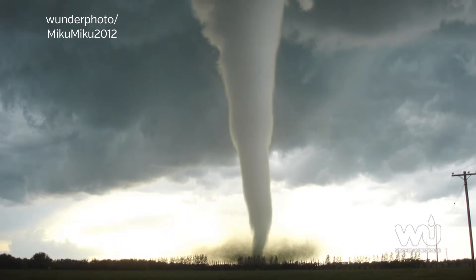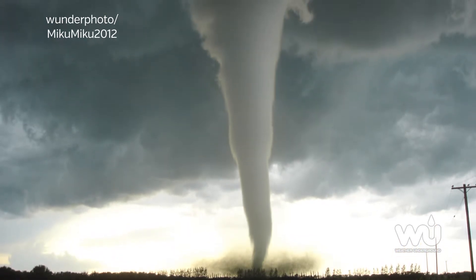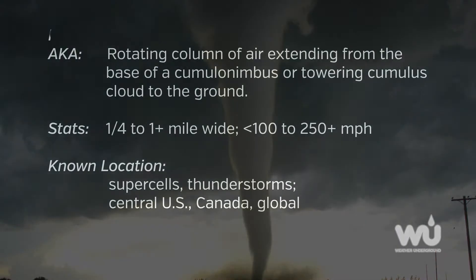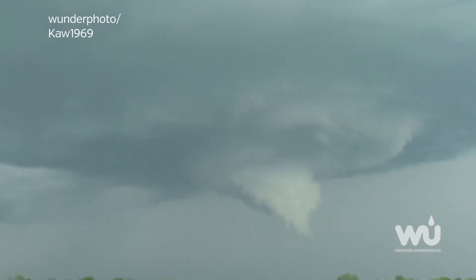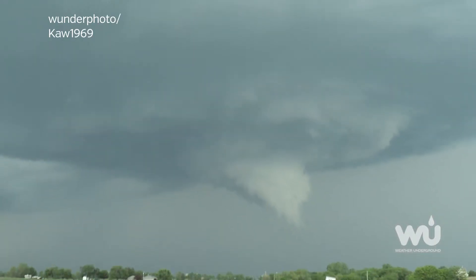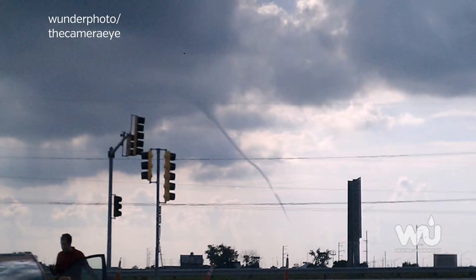A tornado is a rotating column of air, usually less than a quarter mile wide, with winds less than 100 miles per hour. However, the most deadly tornadoes can be over a mile wide and have winds exceeding 250 miles per hour, most often occurring from supercells. The funnel extending downward from the base of the thunderstorm is called a funnel cloud.